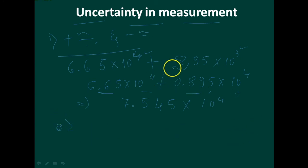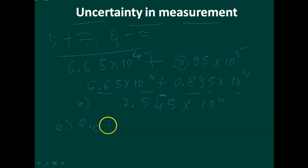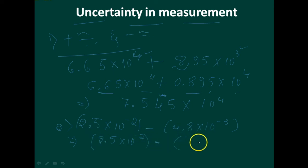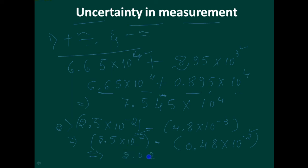For subtraction, consider (2.5 × 10⁻²) − (4.8 × 10⁻³). Convert 4.8 × 10⁻³ to 0.48 × 10⁻², making the exponents the same. Then 2.5 − 0.48 = 2.02, giving the answer 2.02 × 10⁻².